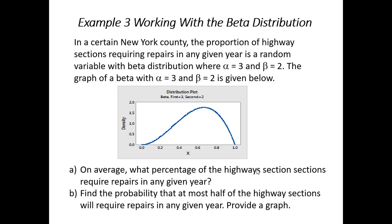So, here we have example 3 working with the beta distribution. In a certain New York county, suppose the proportion of highway sections requiring repairs in any given year is a random variable with a beta distribution where alpha is 3 and beta is 2. So, a very important word that should strike you in the beginning here is that we're studying proportions, the proportions of highway sections. So, maybe it's 30%, 40%, 50%.